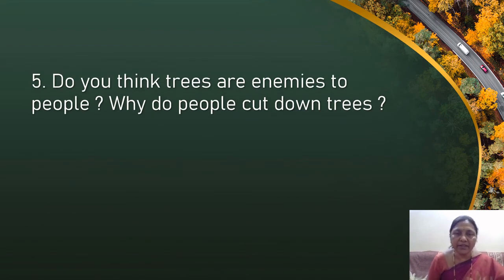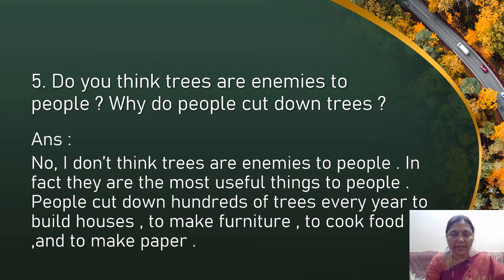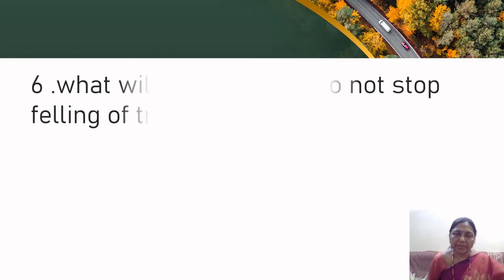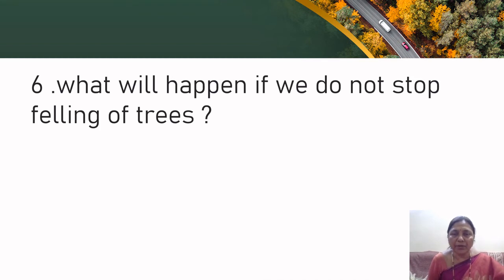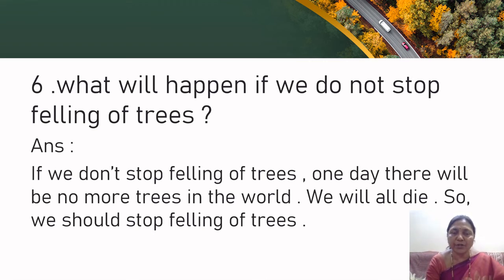Fifth question: Do you think trees are enemies to people? Why do people cut down trees? Answer: No, trees are not enemies to people. In fact, they are the most useful things to people. People cut down hundreds of trees every year to build houses, to make furniture, to cook food, and to make paper. Trees are not enemies — trees are our friends. Sixth question: What will happen if we do not stop felling trees? If we don't stop felling trees, one day there will be no more trees in the world and we will all die. So we should stop felling trees.